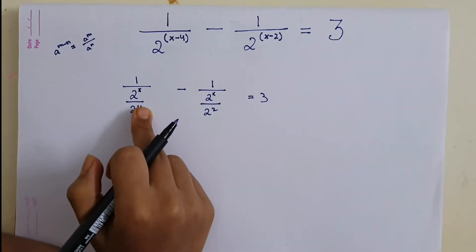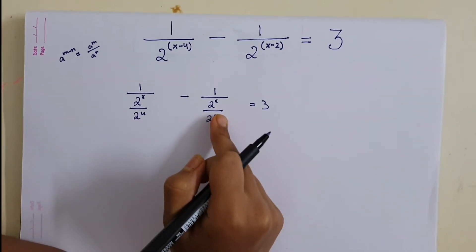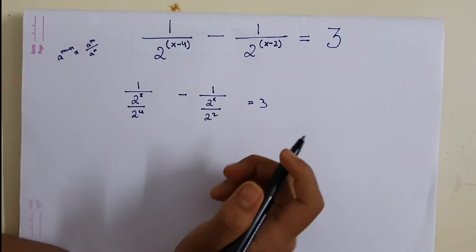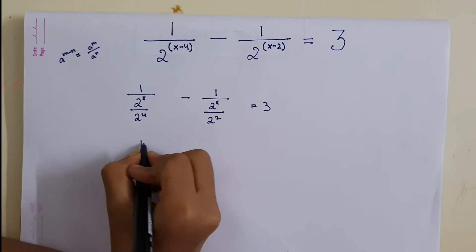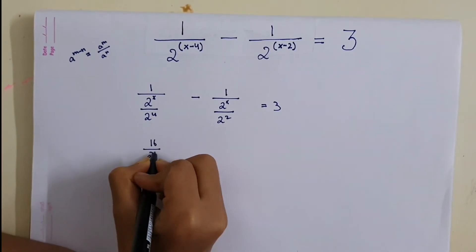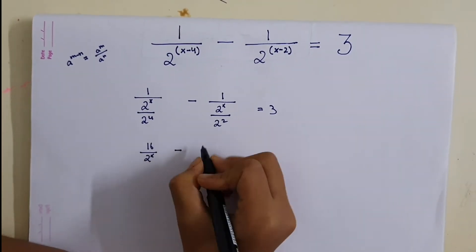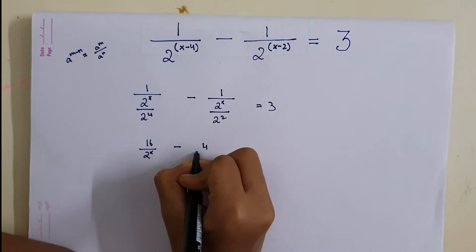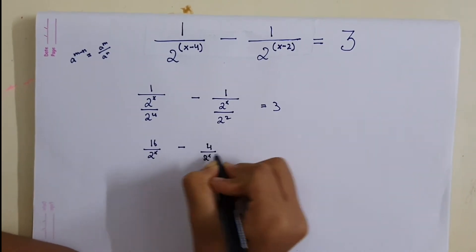So 2 raised to power 4 is 16 and 2 raised to power 2 is 4. So this can also be written as 16 by 2 raised to power x minus 4 by 2 raised to power x equals to 3.